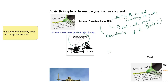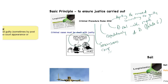Courts must deal with cases expeditiously — as quickly as they possibly can. If you are awaiting trial for a serious offence, the fact that it will affect the rest of your life is bad enough without it being dragged out over a great period of time. They should also ensure that appropriate information is available to the court when bail and sentencing are considered, including aggravating and mitigating factors, pre-convictions, and supportive statements. They must deal with the case taking into account the seriousness of the offence alleged and its complexity.